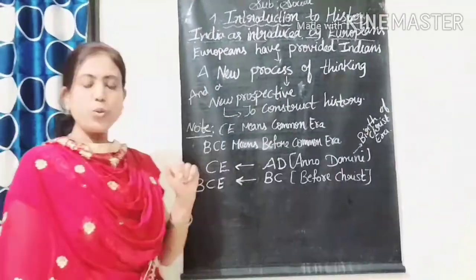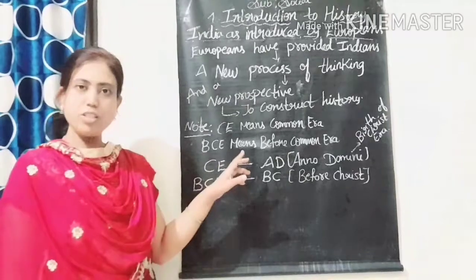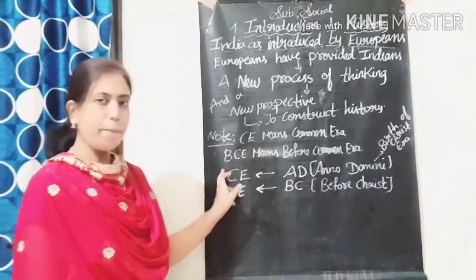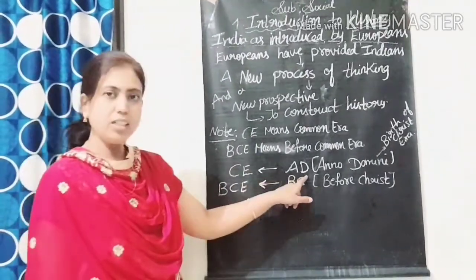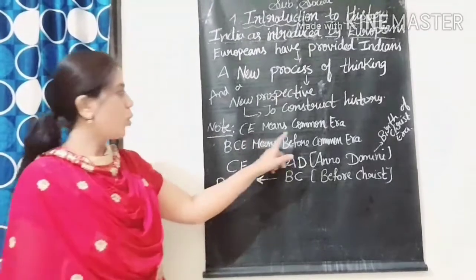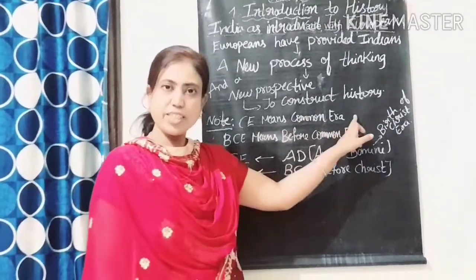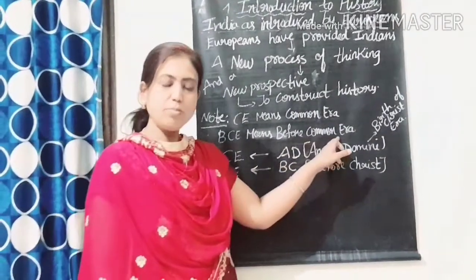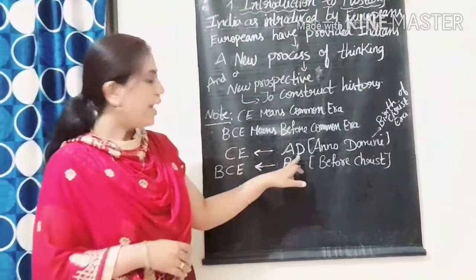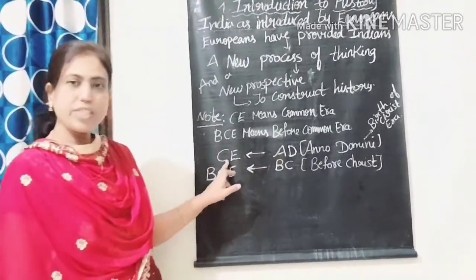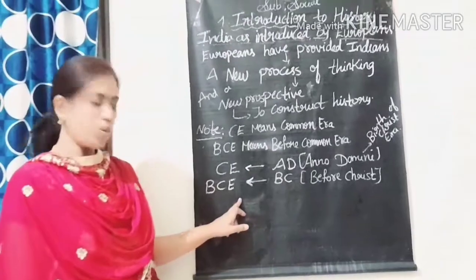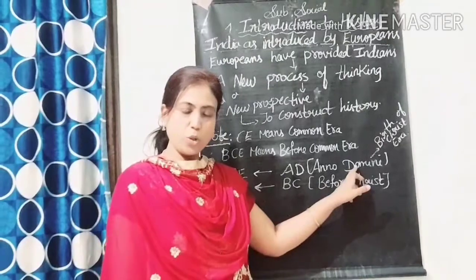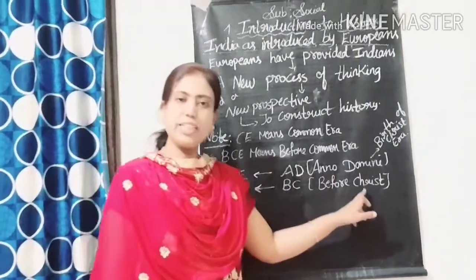When you refer to your social science textbook, you will come across these abbreviations: CE, BCE, AD, and BC. CE means Common Era, referring to after the birth of Jesus Christ. BCE means Before Common Era, meaning before the birth of Jesus Christ. AD is used in place of CE — AD stands for Anno Domini. BC is used in place of BCE — BC means Before Christ.